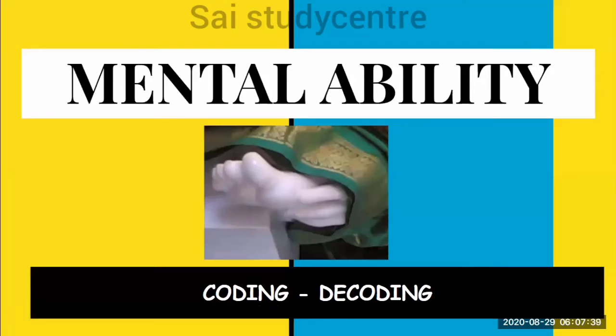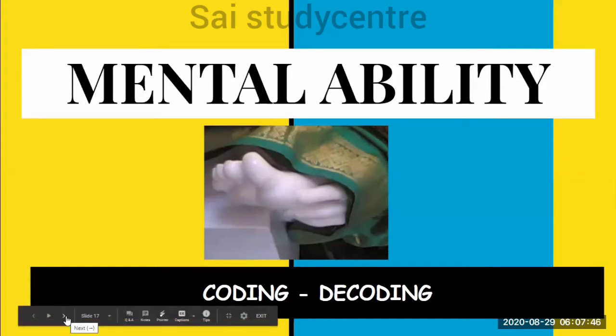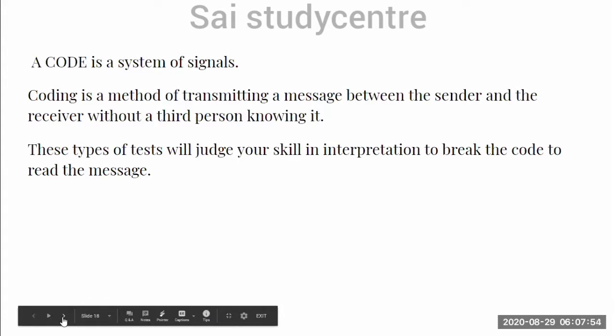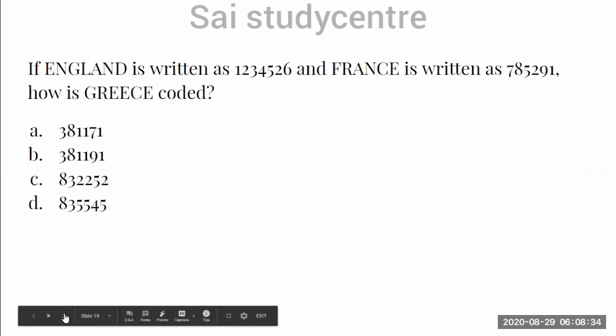Hello students, welcome to Sai Study Centre. In the mental ability series today, we are going to learn about coding and decoding. Coding and decoding is somewhat interesting and relates to number series, alpha, and alphanumerical numbers. Let's move on to the topic and decode some things. Actually, it is called a system of signals. This coding method is used to transmit messages from a sender to a receiver, but passing through some persons, a third person could not crack it. These types of tests in your mental ability series will judge your skill in interpretations and data skills, and how you are breaking the code to read the message.